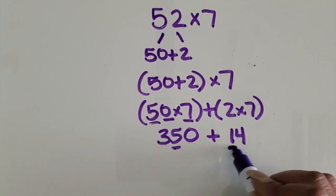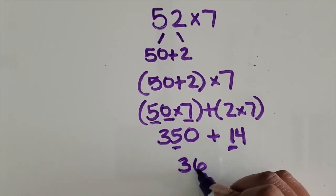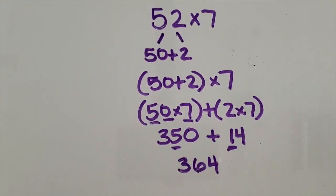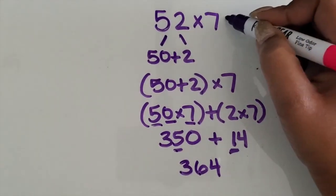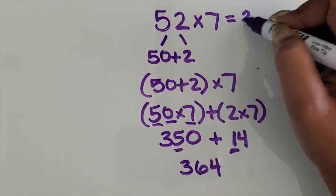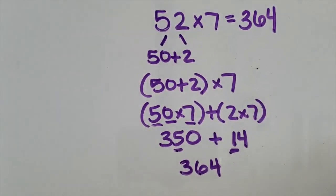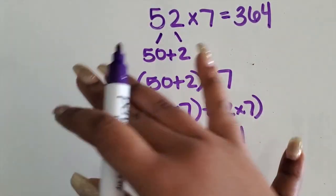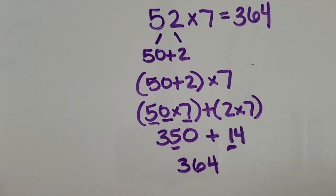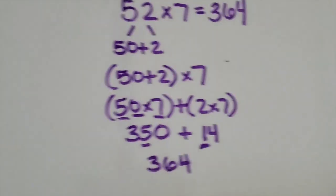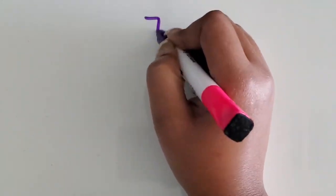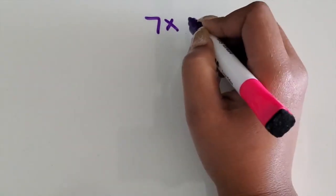So 364 is the total product of 52 and 7. Now sometimes when the factors are switched, students get a little confused, so I'm going to show you what it would look like if we switched the place of those factors. So we're going to start with the one-digit first and then the two-digit number.